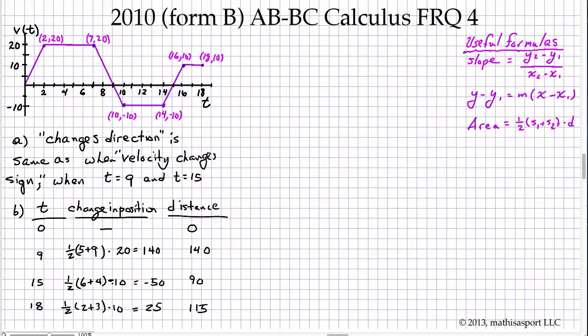Now we're in a position to answer the question. When are we farthest from the building? We are farthest from the building at t equals 9, and our distance is 140.